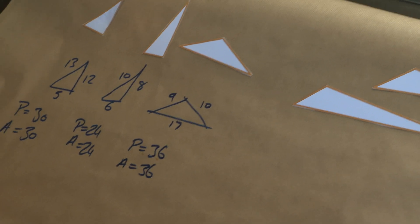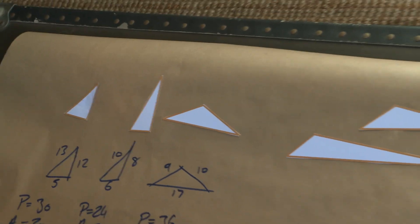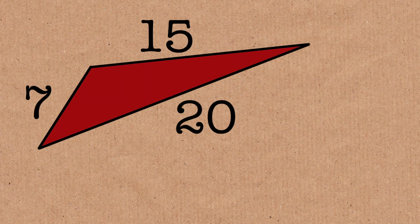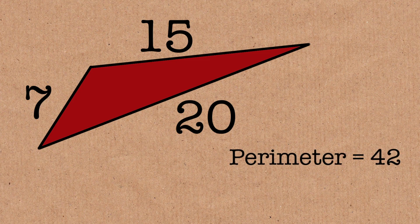These ones aren't right angles, are they? So these last three I'm drawing out are not right-angled triangles. If we look at the perimeter, perimeter 42, area 42.